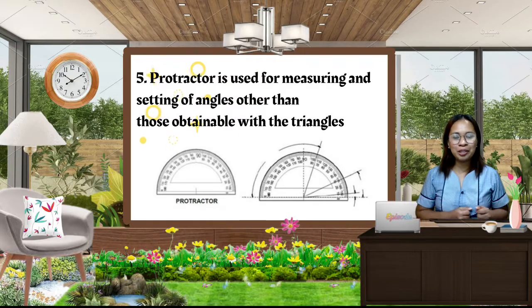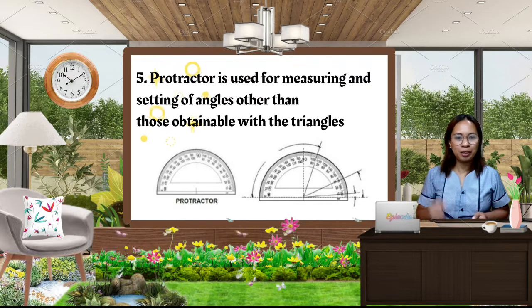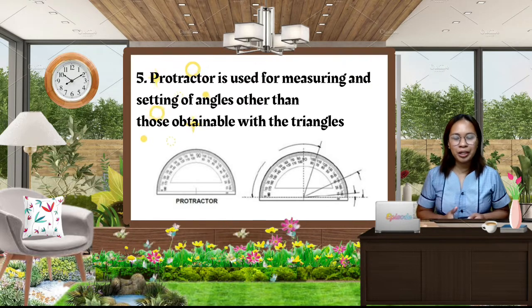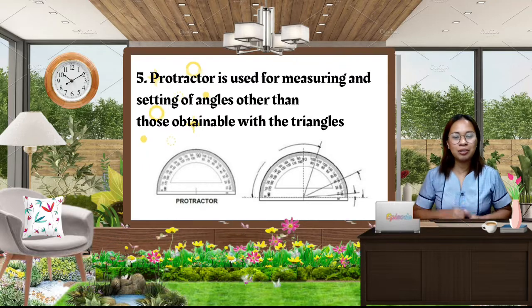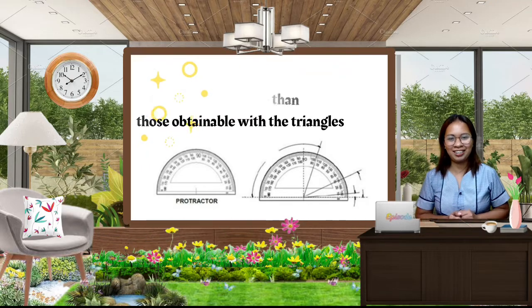The next measuring tool is protractor. Protractor is used for measuring and setting of angles other than those obtainable with a triangle.